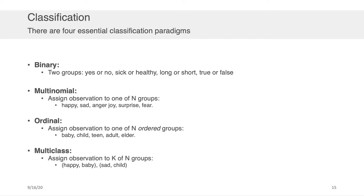The second is multinomial classification — that's when you have an observation and you want to assign it to one of n groups. For example, classifying tweets as happy, sad, angry, joyous, or fearful. There's then ordinal classification, which pertains to assigning an observation to one of n ordered groups — a baby is before a child, a child before a teen, a teen before an adult, and an adult before an elder. Finally, there is multi-class classification, where you assign observations to k of n groups, such as happy babies or sad children — the goal is to provide a set of k classes rather than a single class.